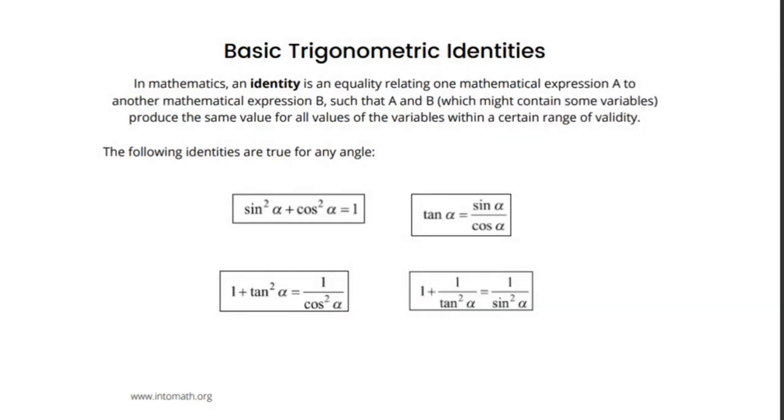In trigonometry, we also frequently use identities. In math, an identity is an equality relating one math expression to another math expression such that the first and the second expression produce the same value for all values of the variables within a certain range of validity. So, the following identities are always true for any angle.